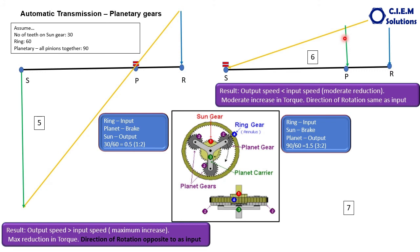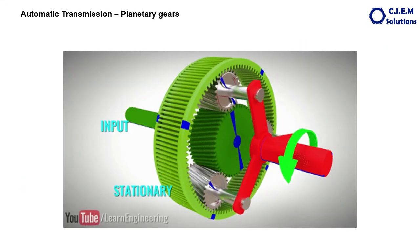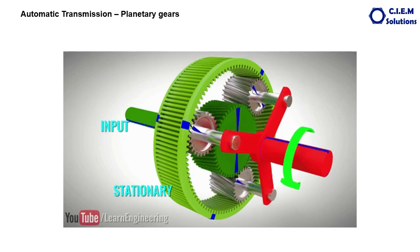What is the seventh case? Locking any two of the three planetary components causes the complete unit to rotate as a single unit — it becomes a direct drive. This is how we obtain the seven variable speeds from a planetary unit. Hope you understand clearly about the planetary unit. In the next video, we will talk about the other components of the automatic transmission.